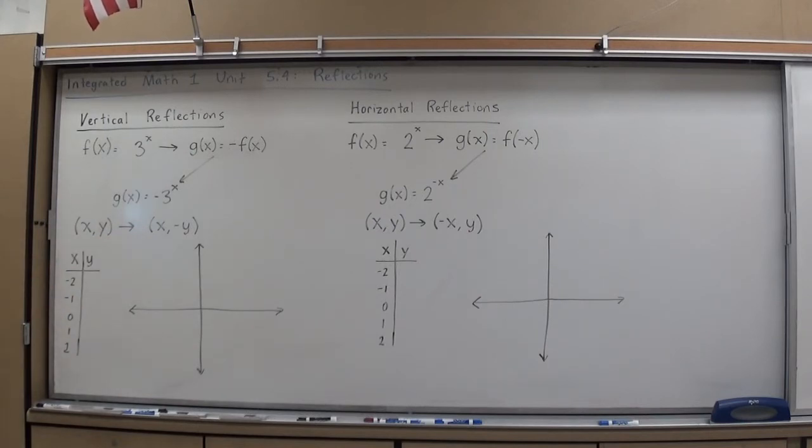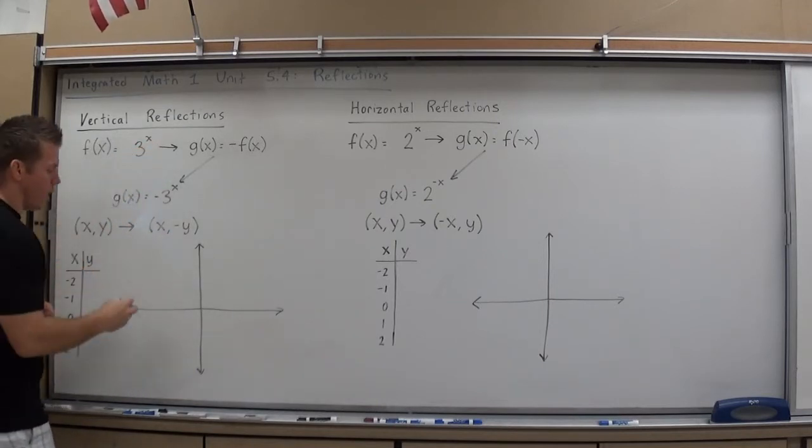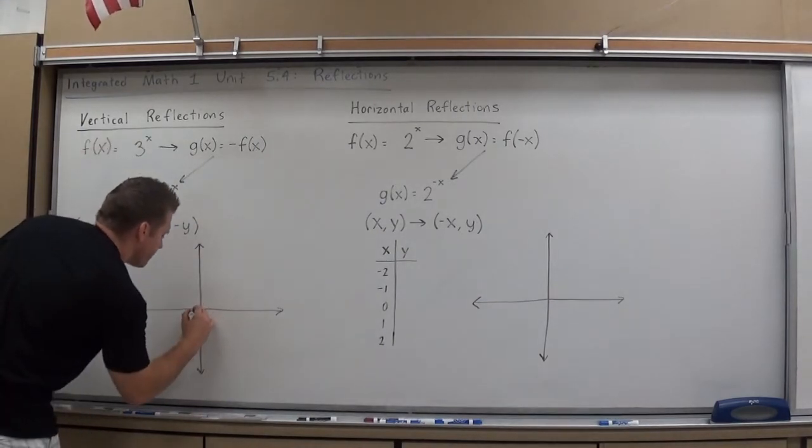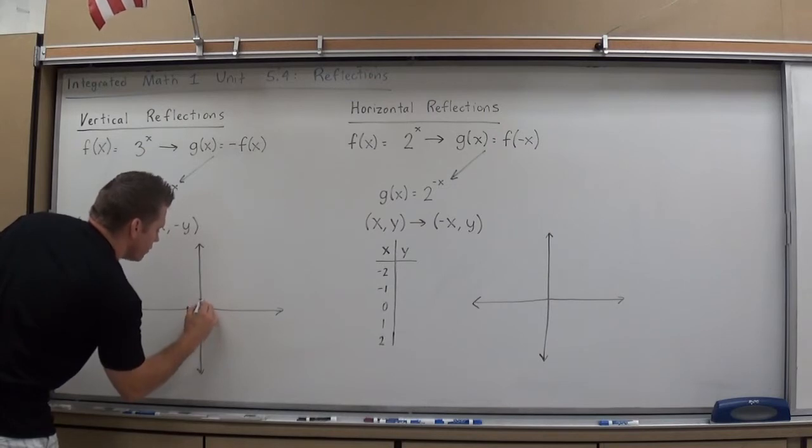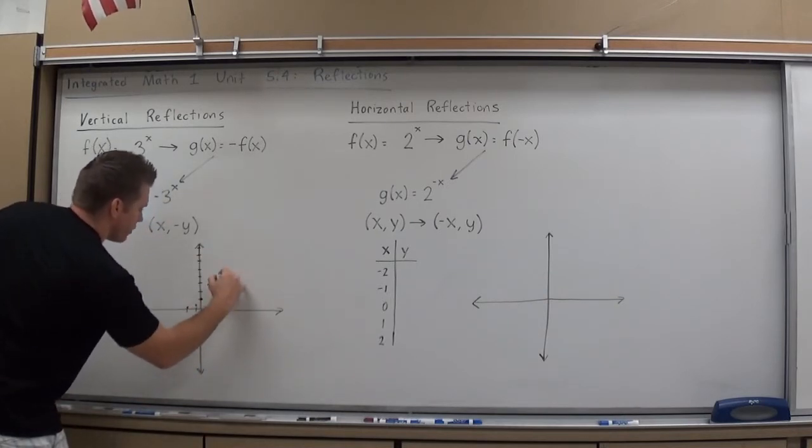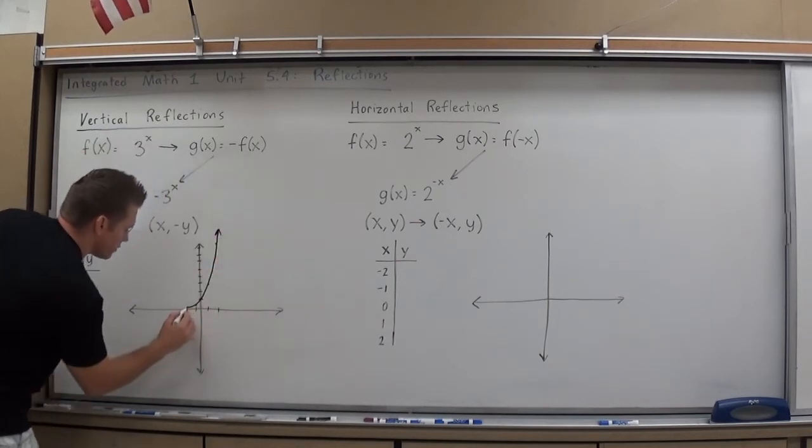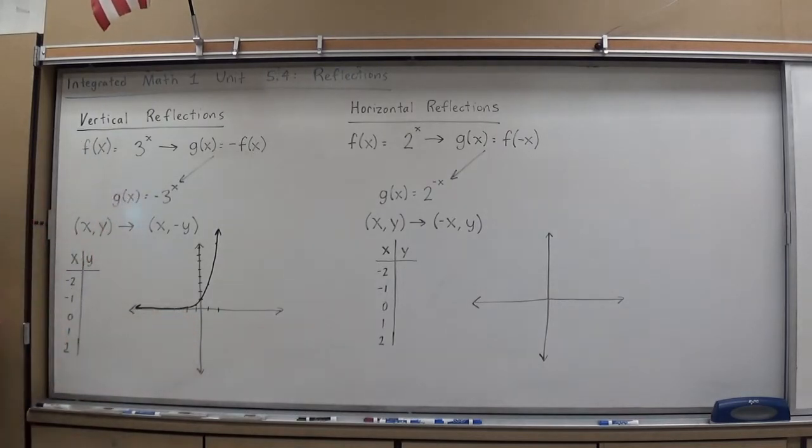To show you what that looks like graphically, I'll first graph 3 to the x without a table, just doing it real quick in our head, and then we'll plug it into the reflected version of the function and compare them. So without doing the table for the new one, 3 to the negative 2 is 1 ninth, 3 to the negative 1 is 1 third, 3 to the 0 is 1, 3 to the 1 is 3, and 3 to the 2nd is 9. So I get my standard-looking exponential function with an asymptote at y equals 0.